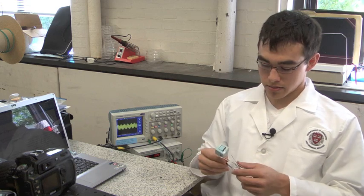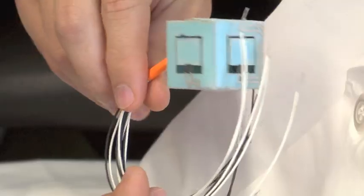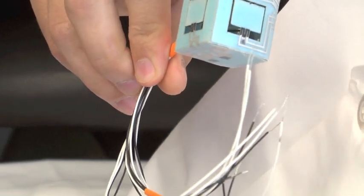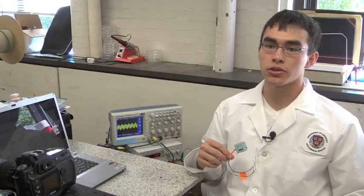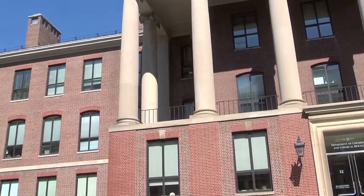I have here one of my paper accelerometers. You can see a bunch of wires coming out of it. These wires are used for inputting a certain voltage, and then the output voltage will tell us the acceleration of the device.